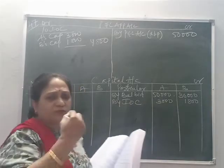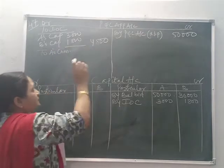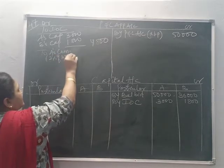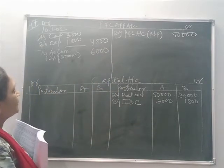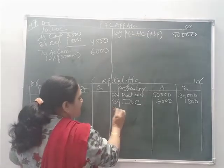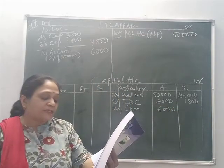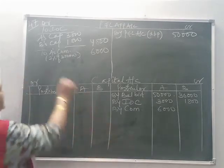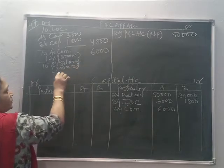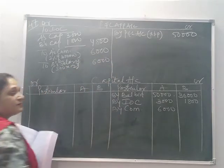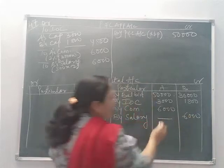A's commission: 2% of 3,00,000 = 6,000. By commission in A's account: 6,000. B will get a salary of 500 per month. To B's salary: 500 into 12 = 6,000. By salary of B: 6,000. A is not given any salary.